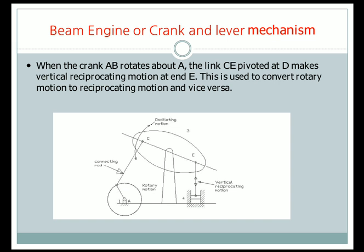The first inversion is the beam engine or crank-lever mechanism. Here, when the crank AB rotates about point A, the point B is at the end of the crank. There is a connecting rod and a rocker, and you can see that at the end there is a vertical reciprocating motion. When the crank is rotating about point A, it transfers motion to the connecting rod through link 3.